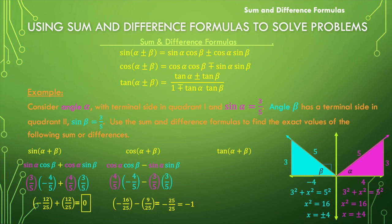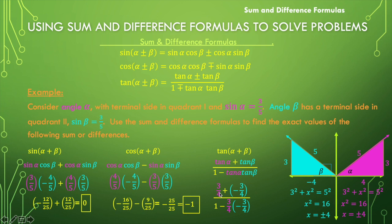For tangent of alpha plus beta, we use the tangent sum formula. Tangent of alpha is opposite over adjacent, or three over four. Tangent of beta is three over negative four, which is negative three over four. In the numerator we get three-fourths plus negative three-fourths, which is zero. Since the numerator is zero and the denominator is non-zero, the result is zero.